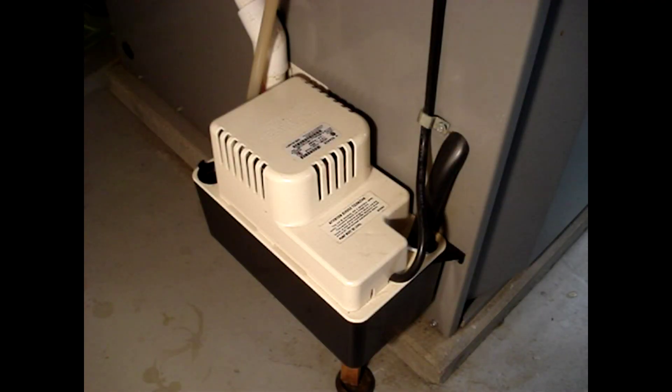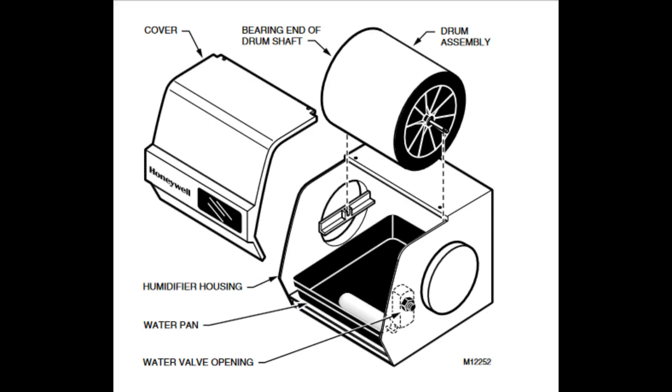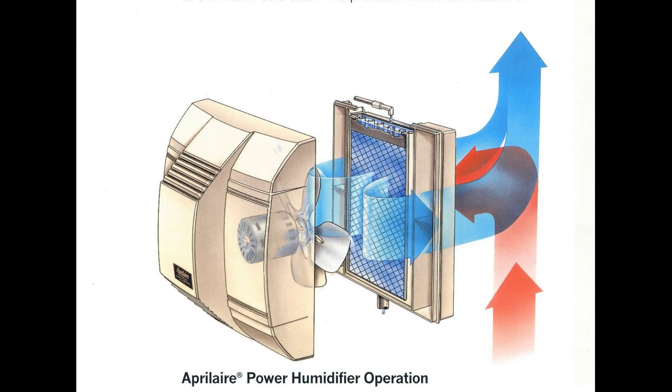Drum humidifiers have a pad that rolls through a pan of water. Power humidifiers have a fan that draws air from the ductwork across the evaporator pad where it picks up water vapor and then returns the moist air to the ductwork.